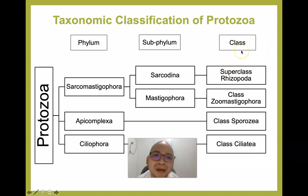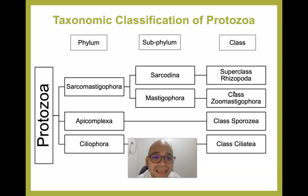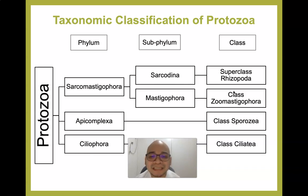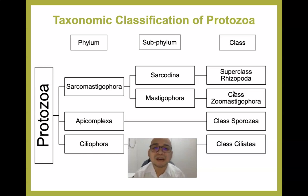How do we classify these protozoans according to their class? These protozoans are classified according to their locomotory organelles. Under the superclass Rhizopoda, the locomotory organelles are pseudopodia. Under class Zoomastigophora, the locomotory organelles are the flagella. For Ciliatea, the locomotory organelles are cilia. However, for Sporozoa, it is the only class of protozoans that does not have specific locomotory organelles, and the majority of its members are pathogenic.